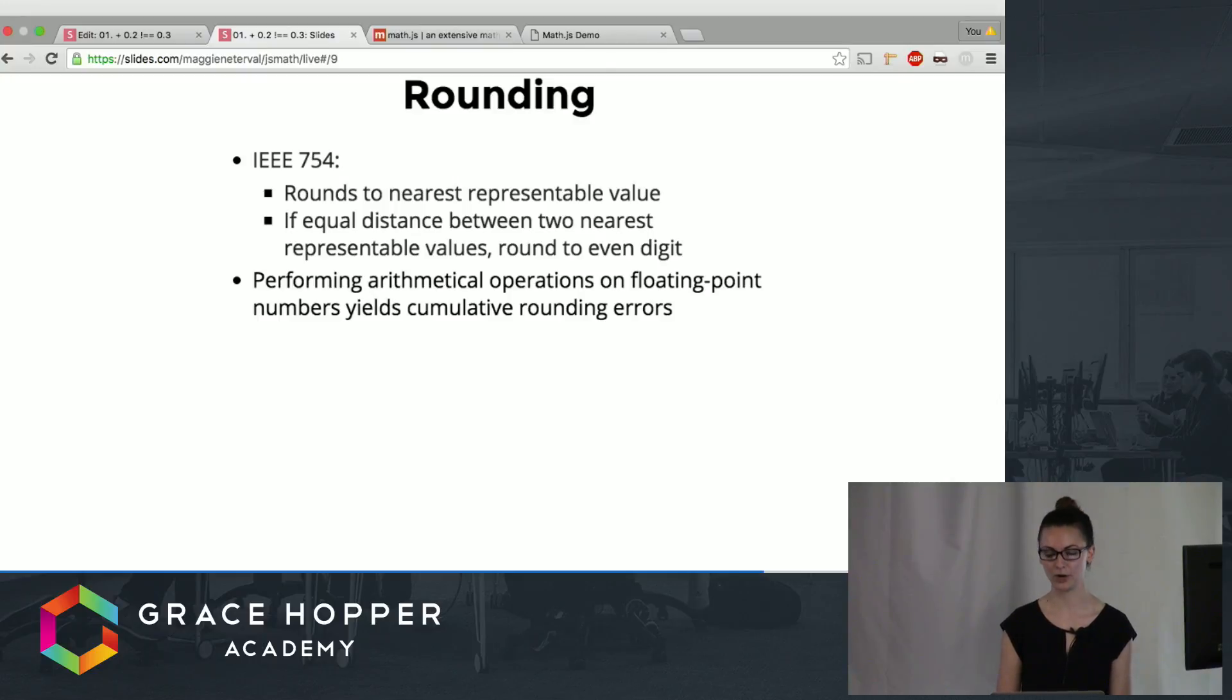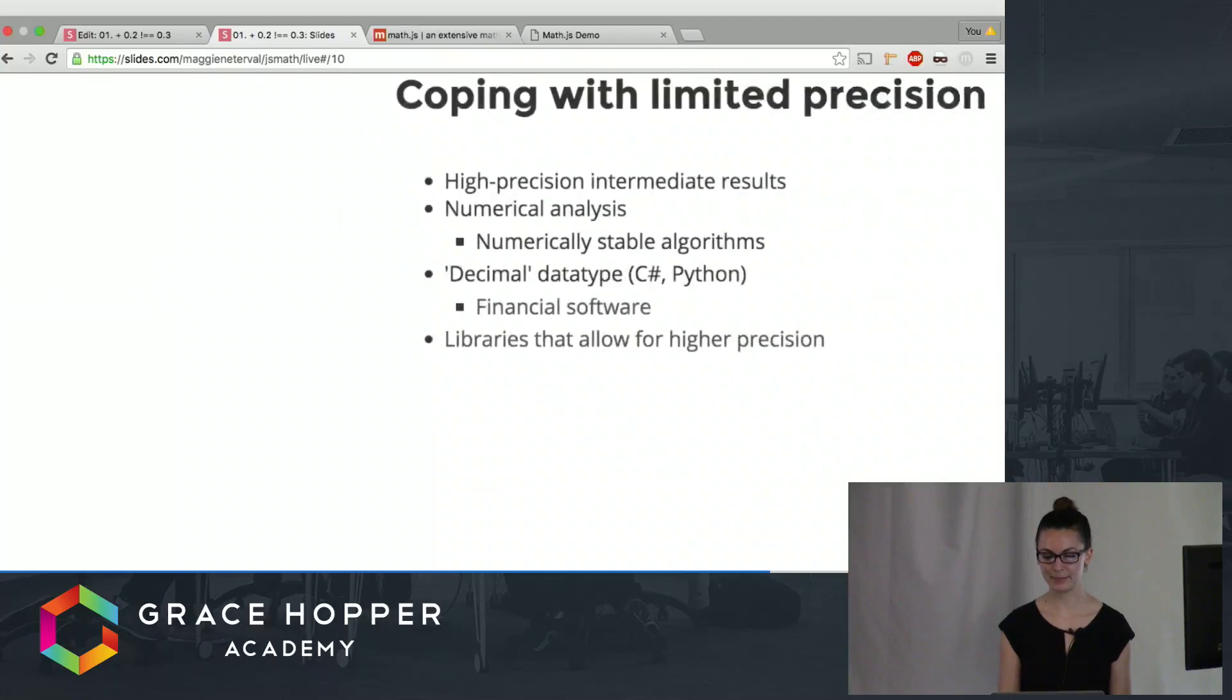This is somewhat arbitrary and because you're rounding these numbers when you perform more than one arithmetical operation on them the errors can be cumulative. So the more operations you're chaining together the more error prone this type of math can be.